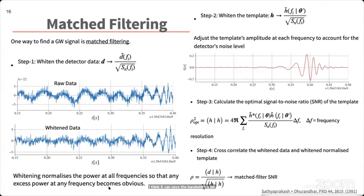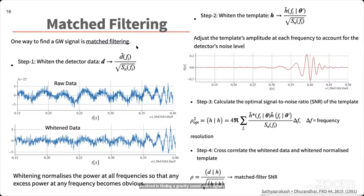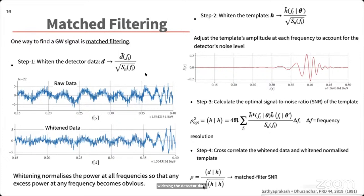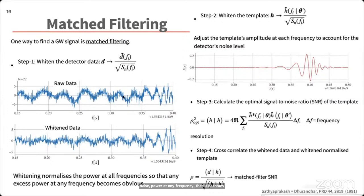In matched filtering, the first stage is whitening the detector data: we take the detector data d, Fourier transform it into the frequency domain, and re-weight it using the noise power spectrum. This ensures that any excess noise power at any frequency becomes more obvious. For example, if there is an excess amount of noise power at a particular frequency and time instant, it becomes much more prominent after whitening.